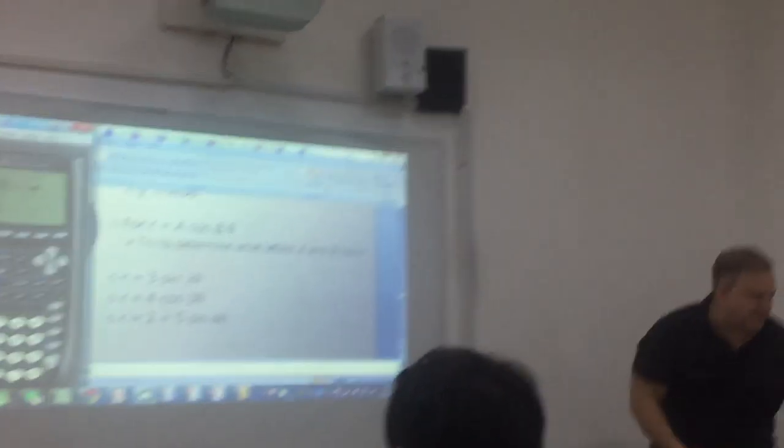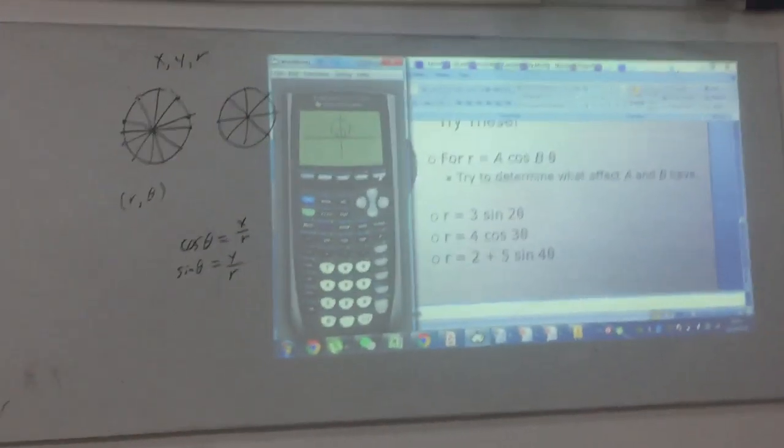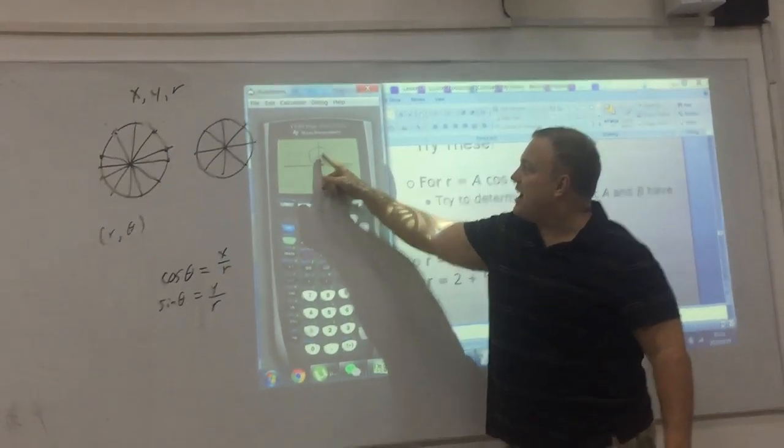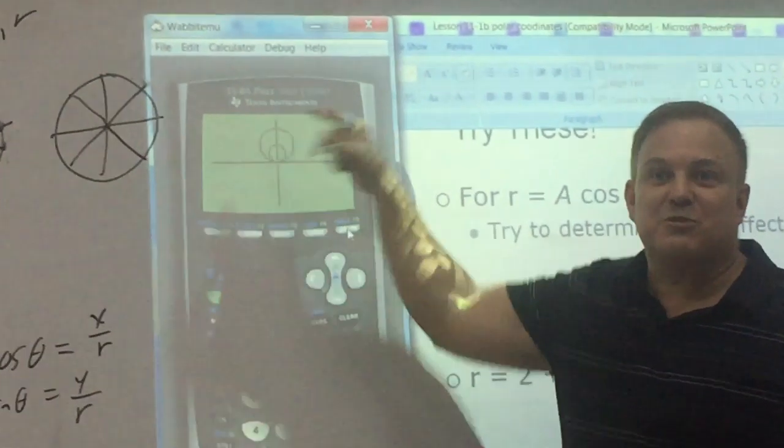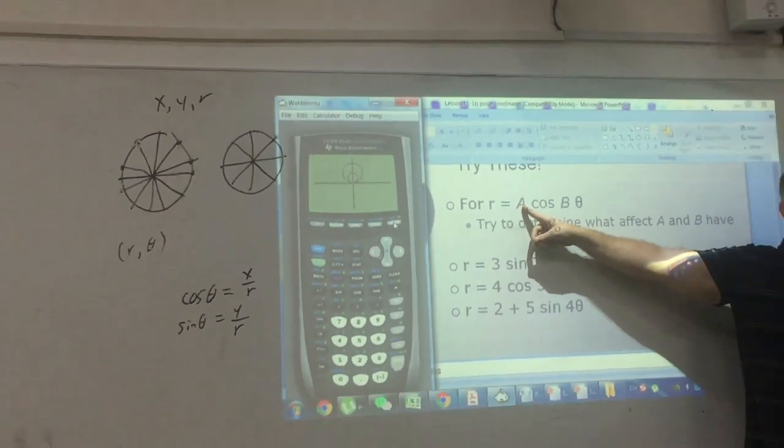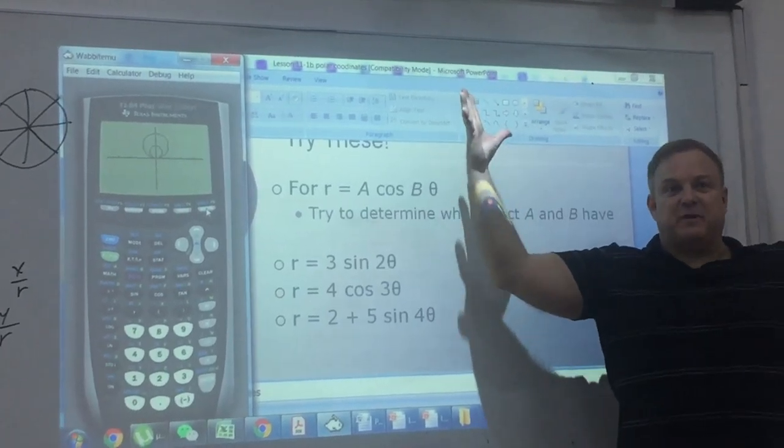Well, we're doing an experiment. Let's see what happens. So, graph. There you go. So this one was R equals sine theta. Now we have 2 sine theta. So, can anybody tell me what happens when A gets bigger? The picture gets bigger, right?